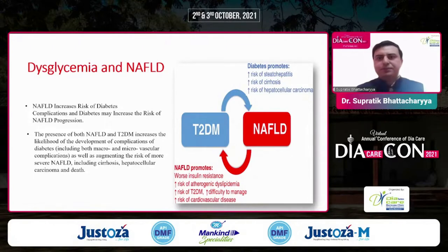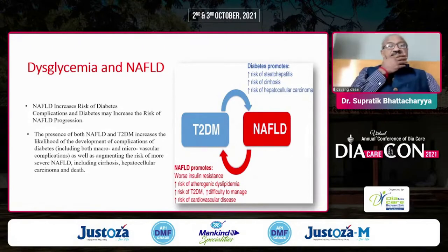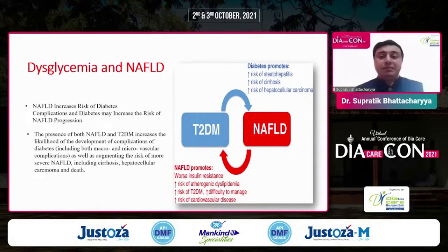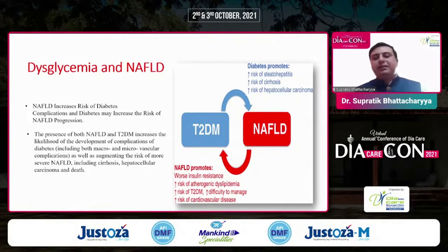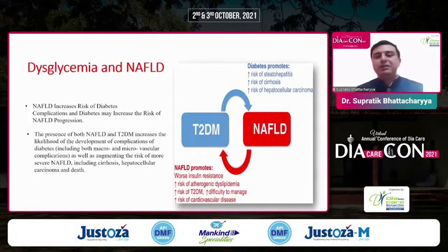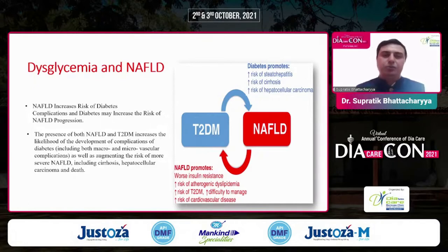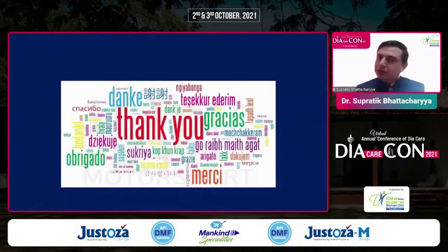To summarize the relation between dysglycemia and NAFLD: diabetes increases the risk of steatohepatitis, cirrhosis, and carcinoma. Similarly, NAFLD worsens insulin resistance, increases the risk of iatrogenic dyslipidemia and diabetes, and is increasingly difficult to manage. There is also a crosstalk between the liver and the heart, which my colleague is going to talk about. Thank you.